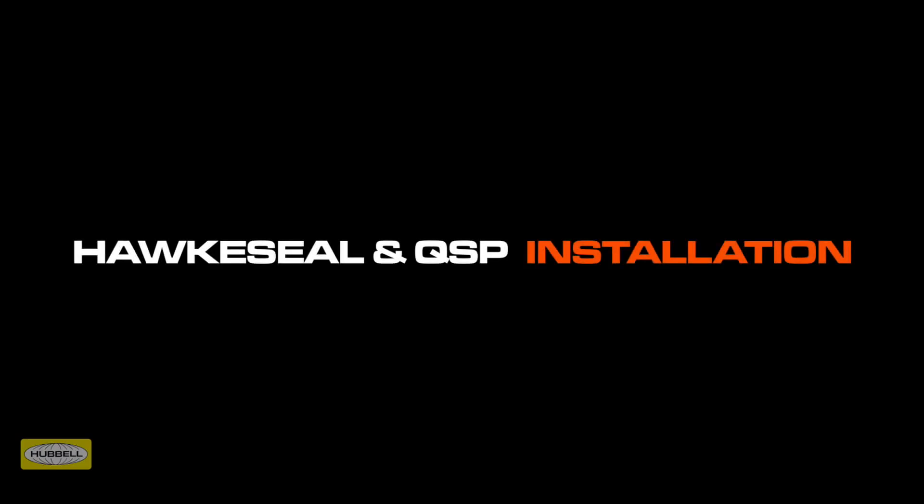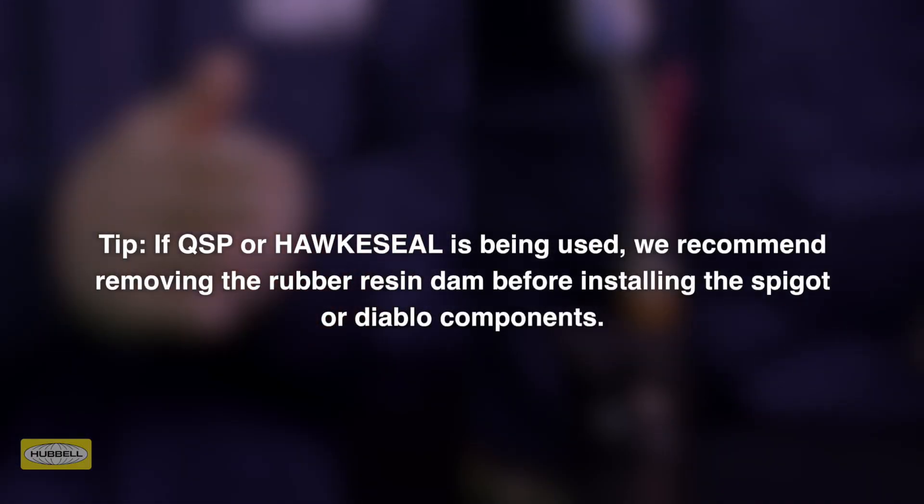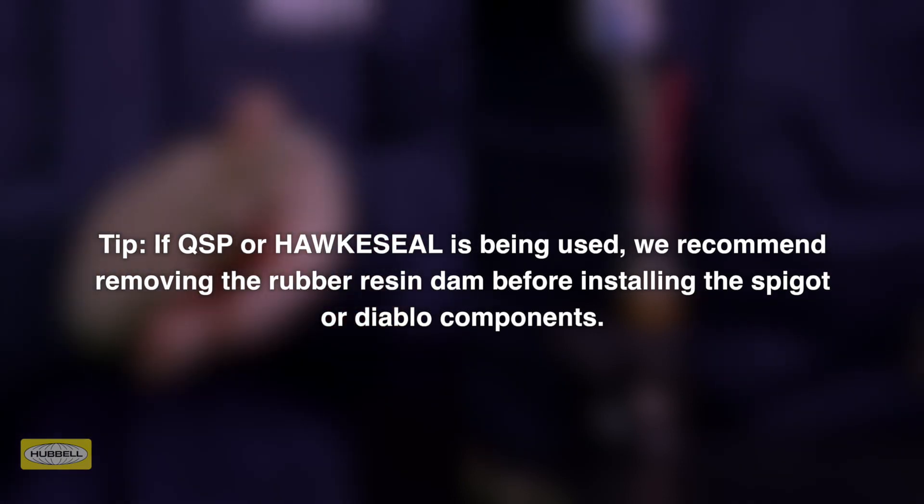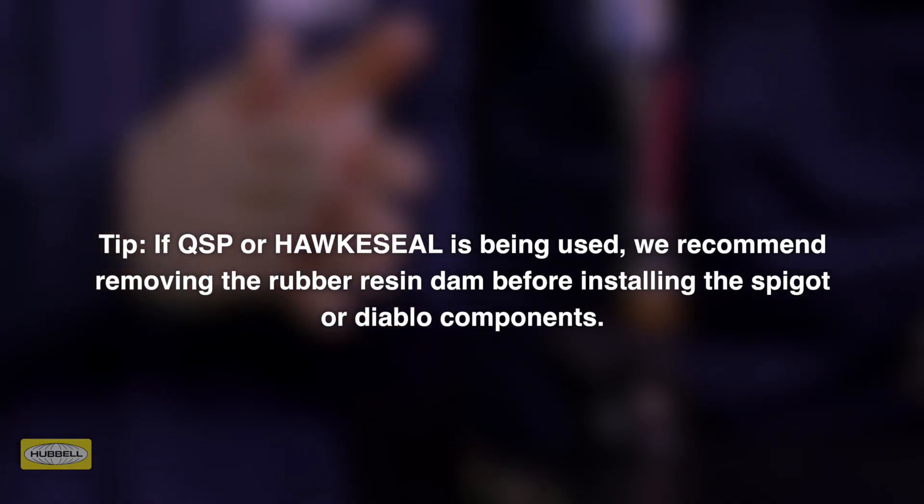The cable gland should already be prepared for putty compound installation as per the assembly instructions. During gland installations we recommend removing the rubber resin dam before installing the spigot or Diablo components.